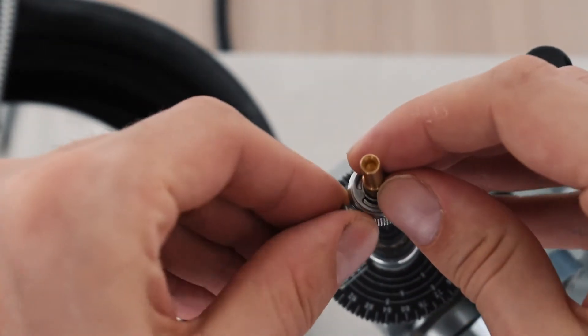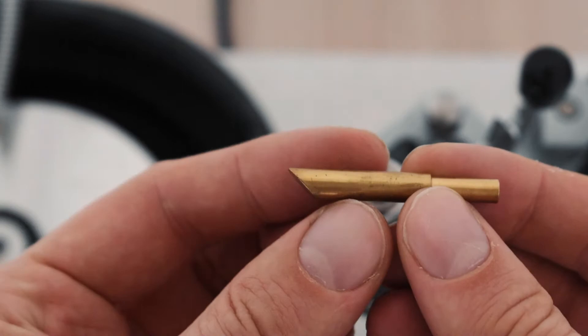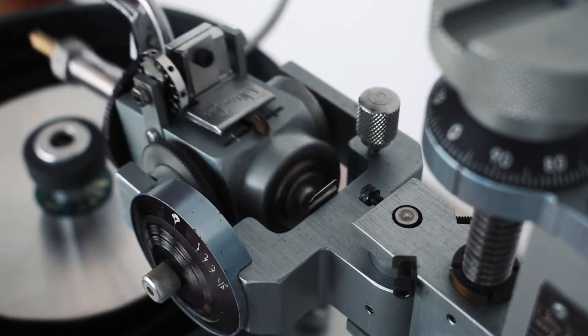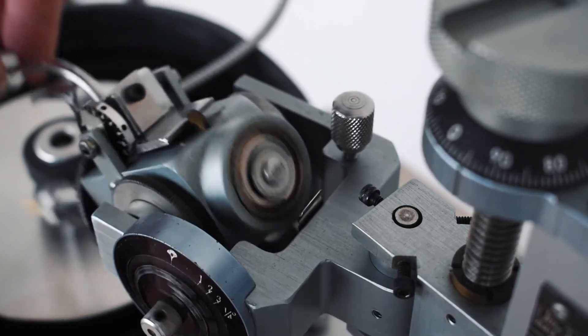Newer Ultratech machines use keyed dops which have a 45 degree angle cut into the bottom of them. The dop can only go into the quill in one direction so you can remove the dop from the quill and then put it back in later without having to worry about realigning the stone with your index.